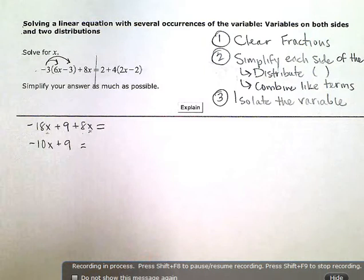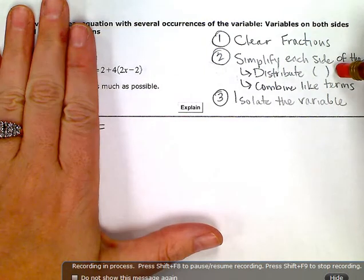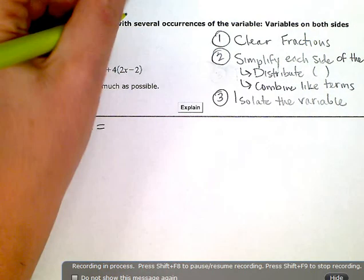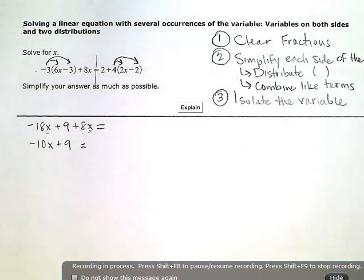Distribute to get rid of any parentheses, and then combine like terms if you can. I need to distribute on this side to get rid of those parentheses.